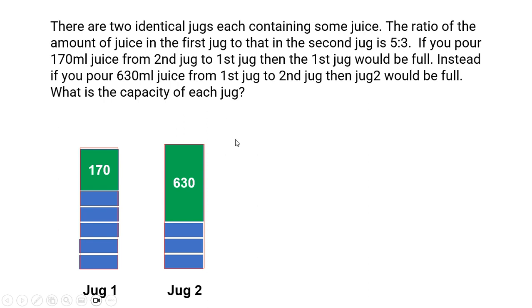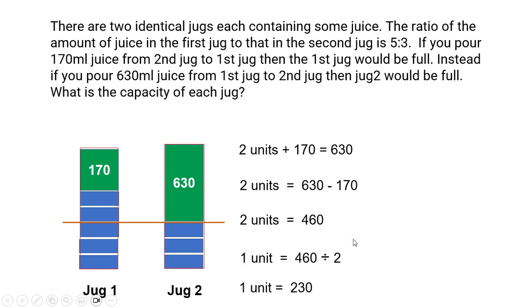We can draw a line here that will differentiate the common units. What you have extra is 2 units plus 170 which is actually equal to 630 ml. So we can write this as a statement: 2 units plus 170 is equal to 630. So 2 units is equal to 630 minus 170 and 2 units is 460. 1 unit is 460 divided by 2 and that is equal to 230.